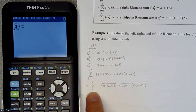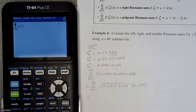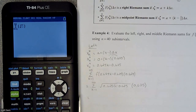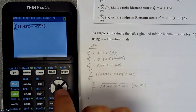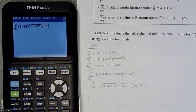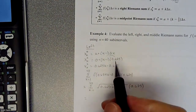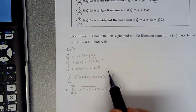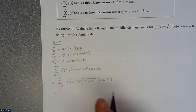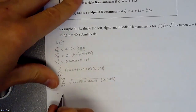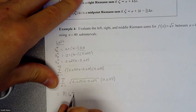We don't have a k variable, so we just put x equals 1, go to 40, and plug in our formula: square root of (0.625x minus 0.625), then outside the square root times 0.625. Plug that in and we get the summation without having to do everything manually. We get 81.6714. So that is our left Riemann sum.